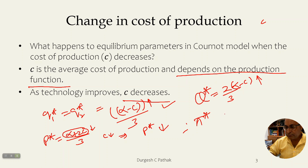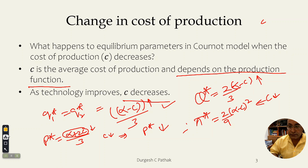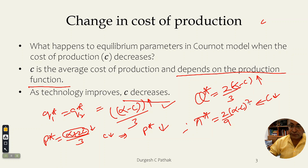Now what is going to happen to profits? Looking at individual firm profit π* equals (alpha minus C) squared divided by 9 — C is decreasing in the numerator, so (alpha minus C) is increasing, and the square of that term is also increasing. So with a decrease in cost of production, individual firm quantities and total market quantity increase, equilibrium price decreases, and equilibrium profits increase.